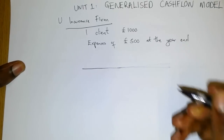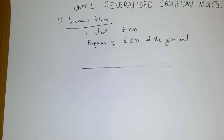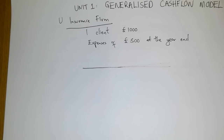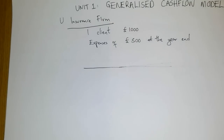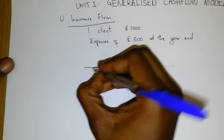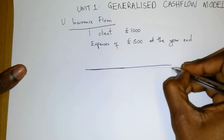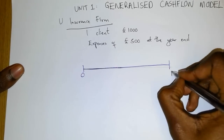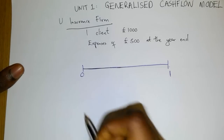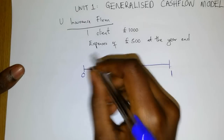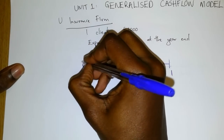If we draw a timeline — let me just grab another pen and I'll be right back. Right, if we draw a timeline from time zero to time one, because we're looking at this insurance firm over a period of one year.